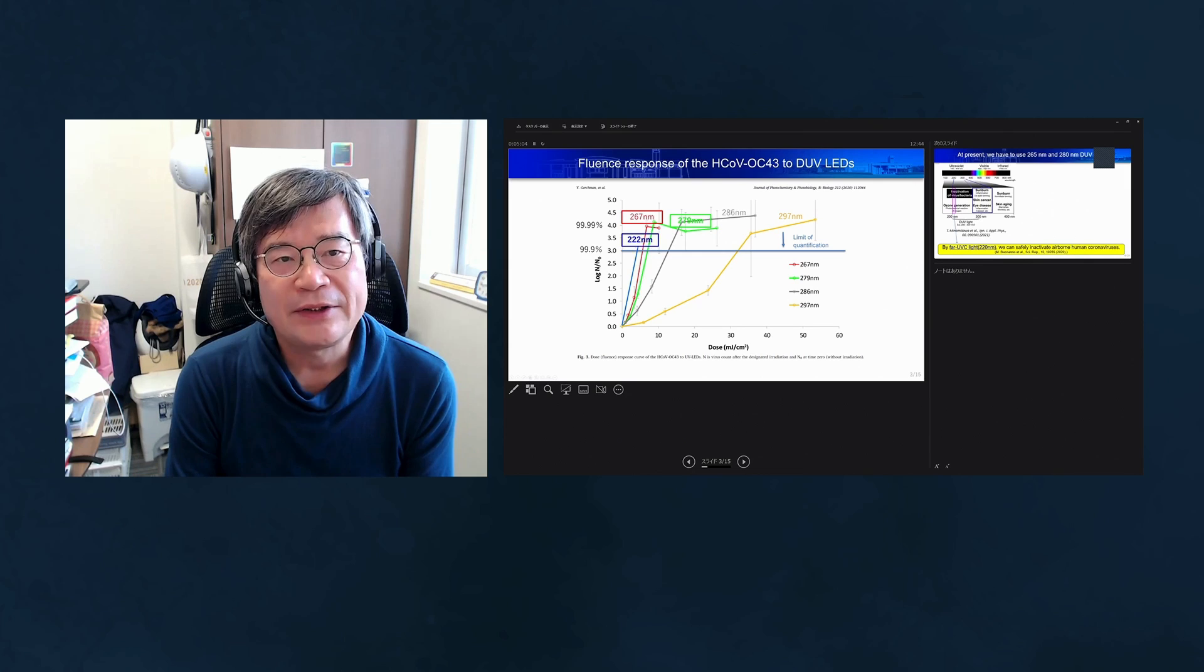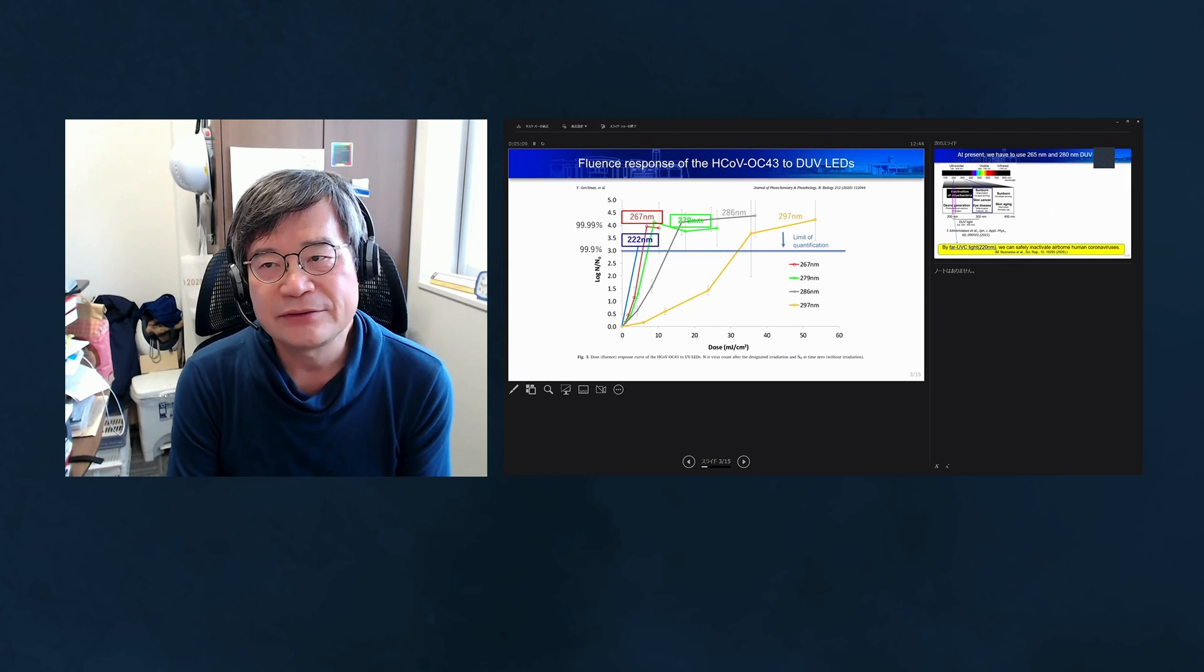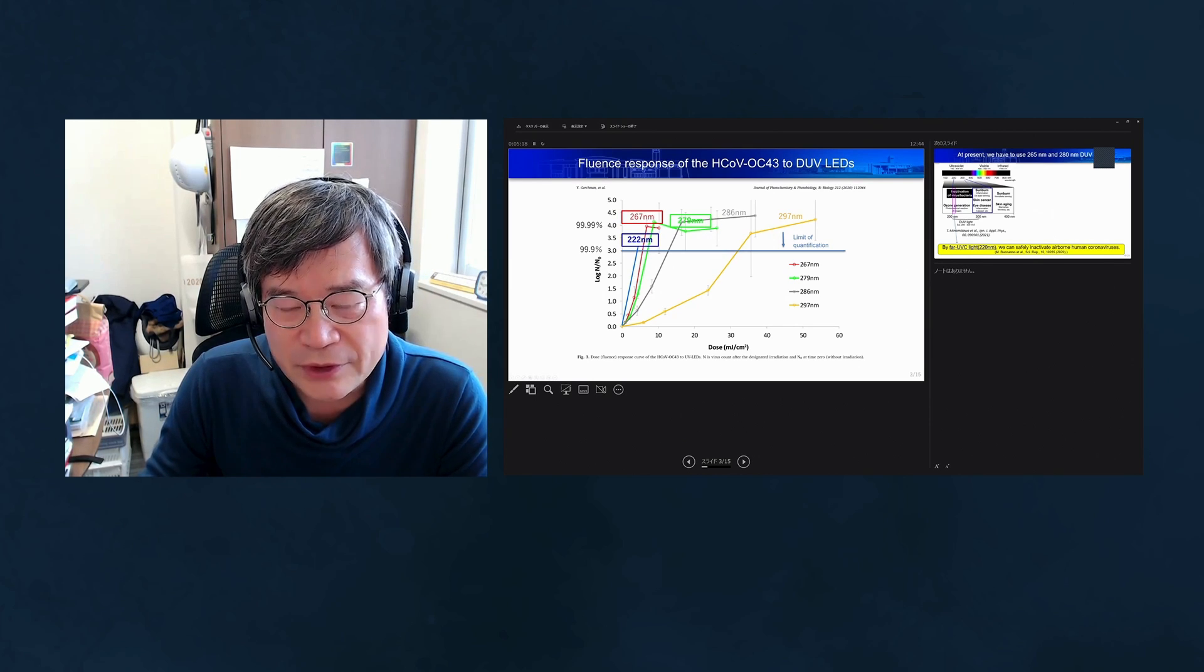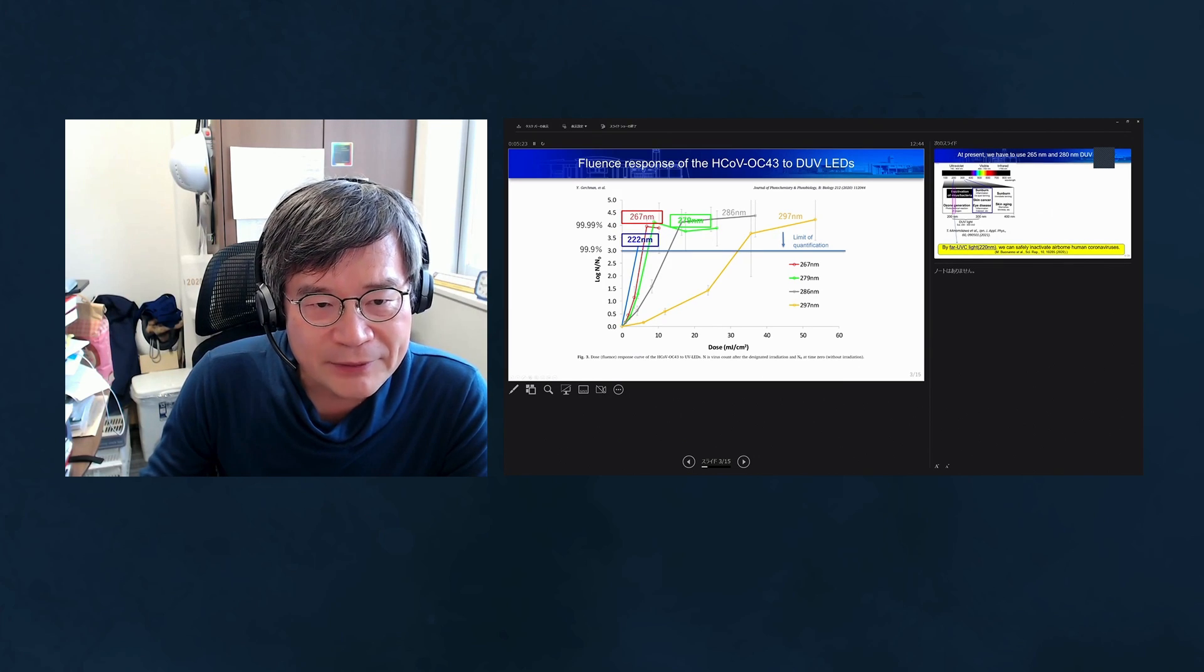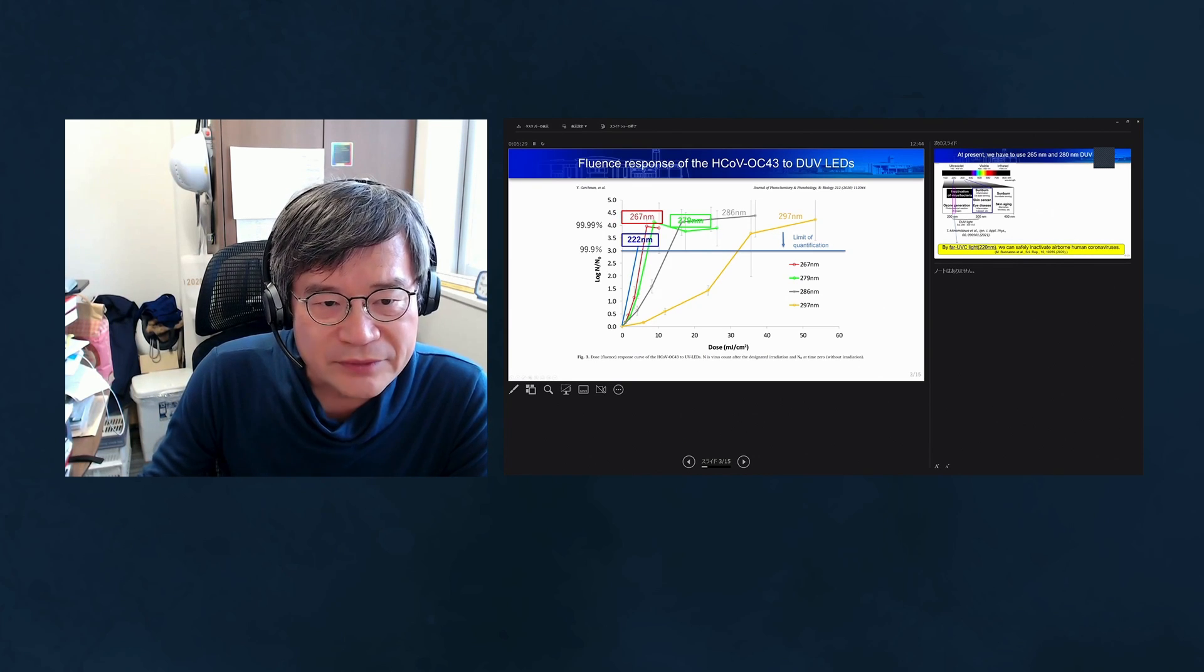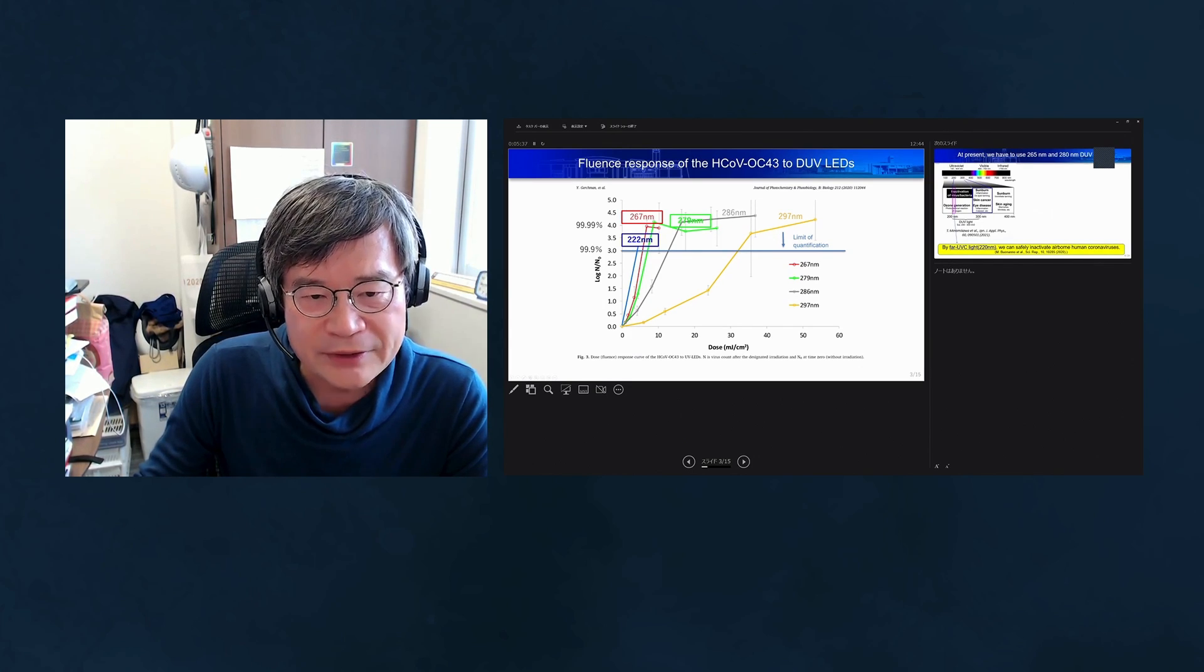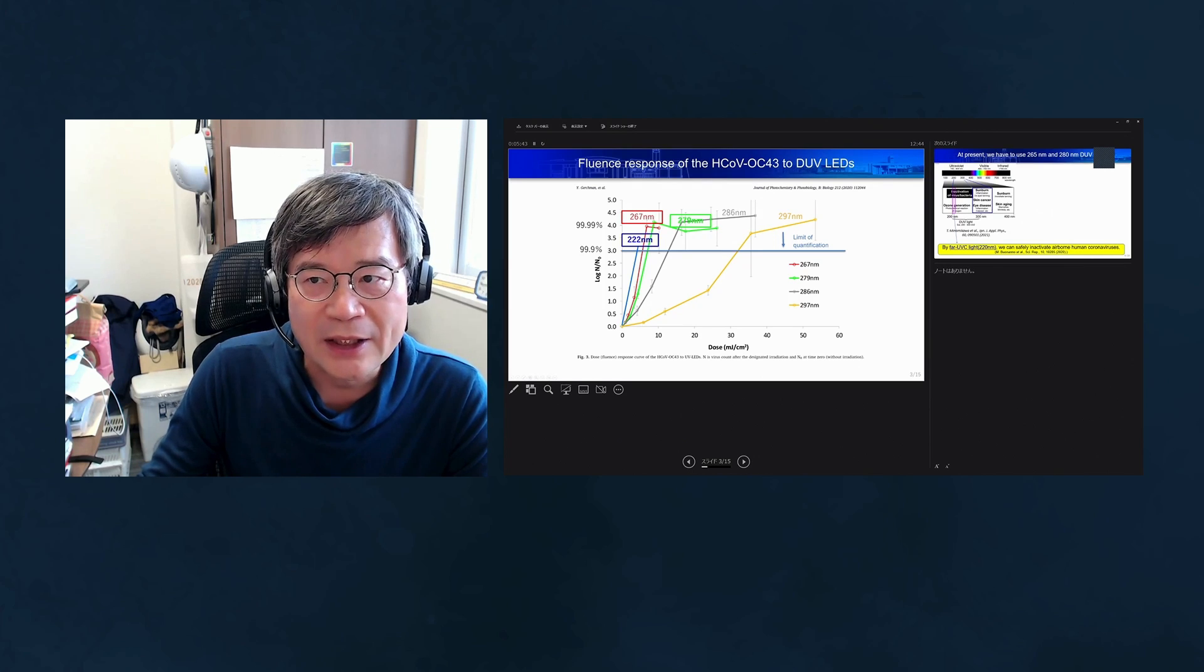As for the fluence response of COVID-19-like viruses to deep UV LEDs, this graph shows the inactivation rate as a function of LED light dose. The vertical axis is in logarithmic scale. As shown, shorter wavelengths like 222 nanometer light are more effective than longer wavelengths.